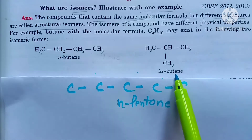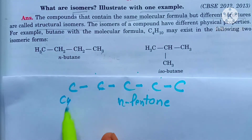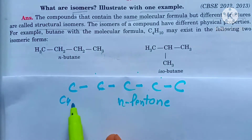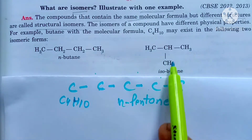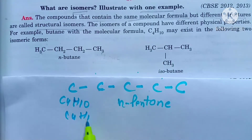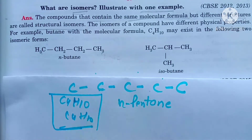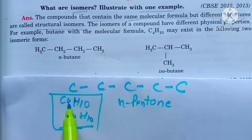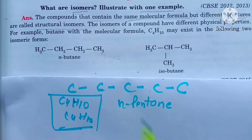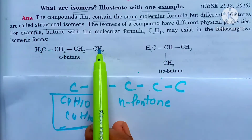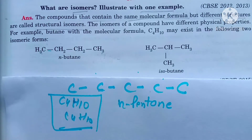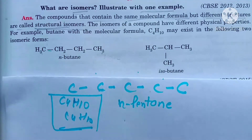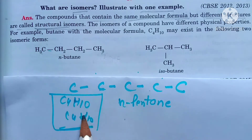The formula for both n-butane and isobutane is the same: C4H10. Isomers are compounds which have the same molecular formula but a different structural formula.